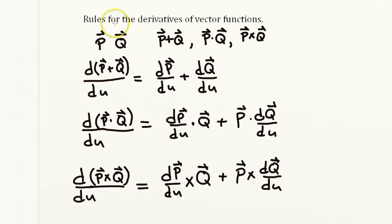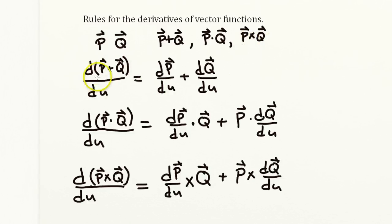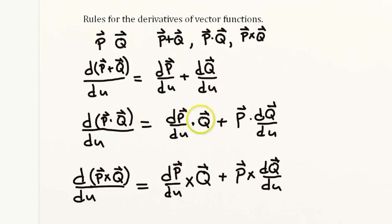Let's review the rules for taking derivatives of vector functions. If you have two vectors P and Q, they can be combined in three different ways: by adding them, by taking their dot product, and by taking their cross product. If you need to take the derivative of the sum of two vectors, just take the derivative of the first and add it to the derivative of the second. If you need to take the derivative of the dot product of two vectors, take the derivative of the first dotted with the second, plus the first dotted with the derivative of the second.